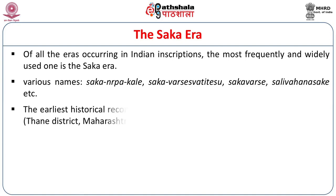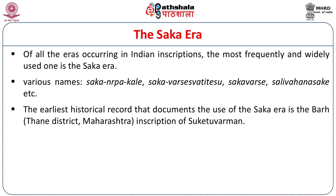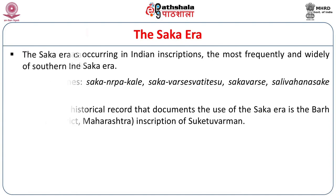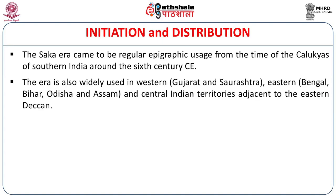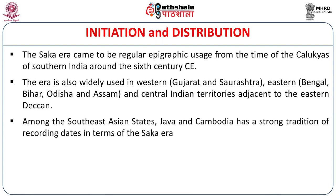The earliest historical record documenting use of the Shaka era is the bar inscription of Sukhetu Varman found from Maharashtra, Thana district. It came into regular epigraphic usage from the time of the Chalukyas of South India around the 6th century CE. The era is also widely used in Western Gujarat and Saurashtra, Eastern India — Bengal, Bihar, Odisha and Assam — and Central Indian territories adjacent to Eastern Deccan. Among Southeast Asian states, Java and Cambodia have a long tradition of recording dates in terms of the Shaka era, giving it a fairly wide geographical distribution of usage.